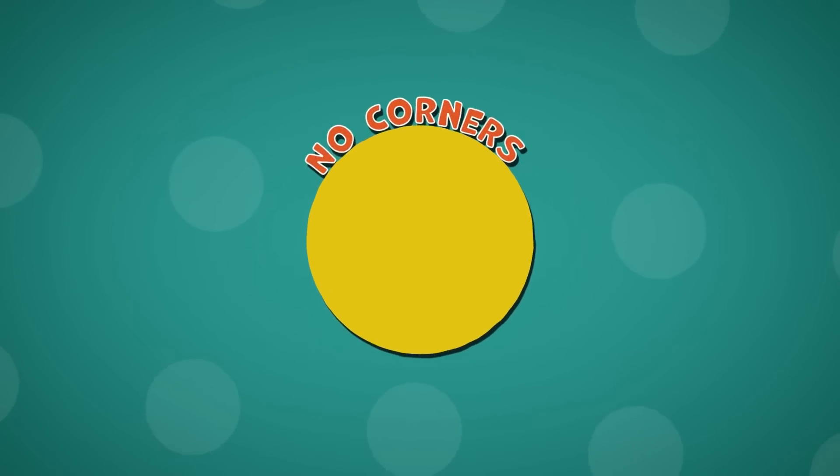A circle is a bit different from quite a lot of other shapes. It has only got one side and no corners.